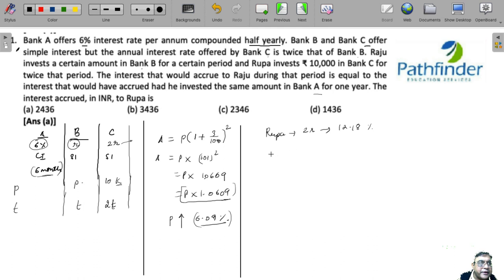So at 12.18%, how much will Rupa earn? Rupa will earn 10,000 into 12.18%, which is 1218. But since Rupa invested the money for twice the period, she will earn twice this amount. So we multiply Rupa's effective interest by 2.